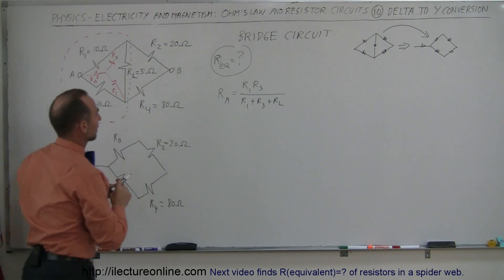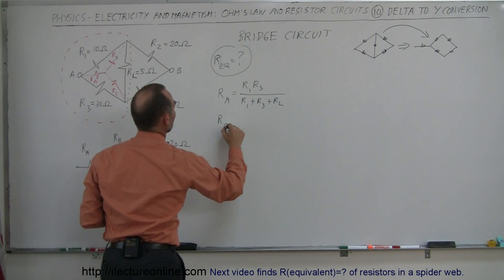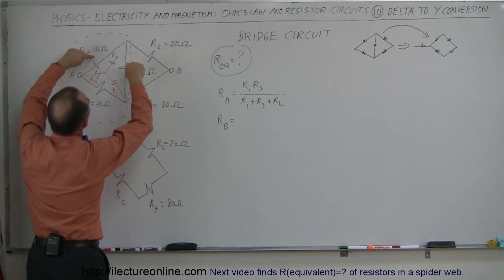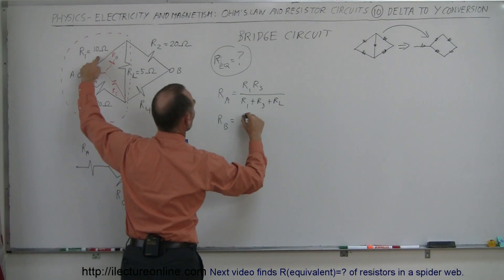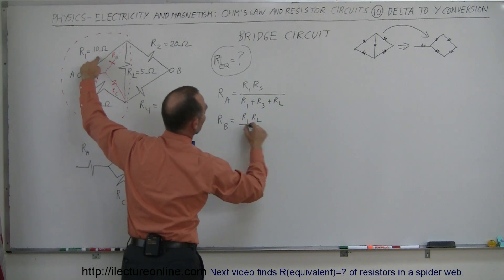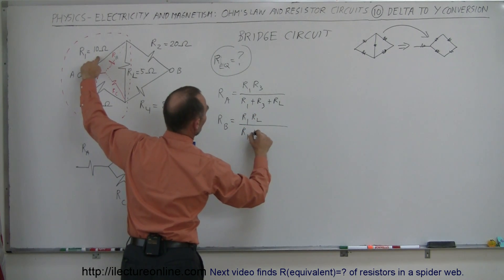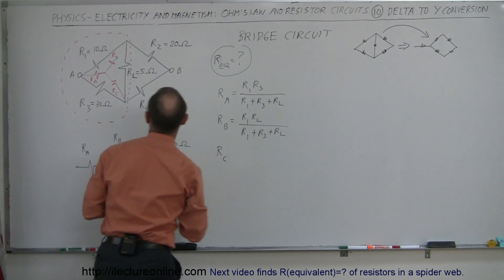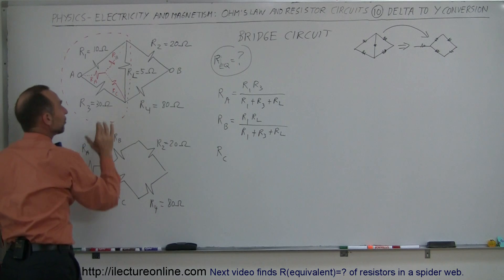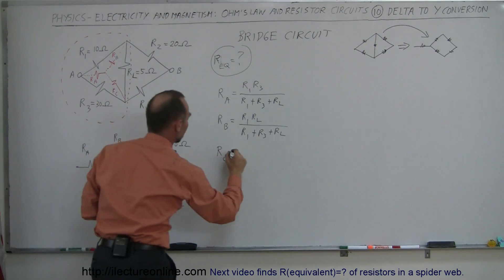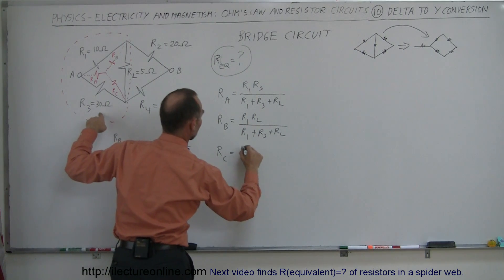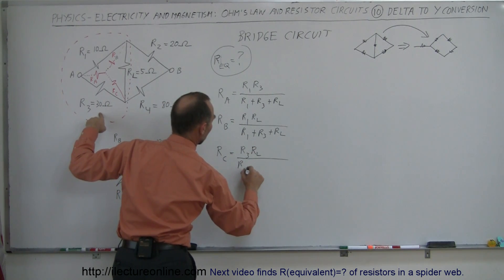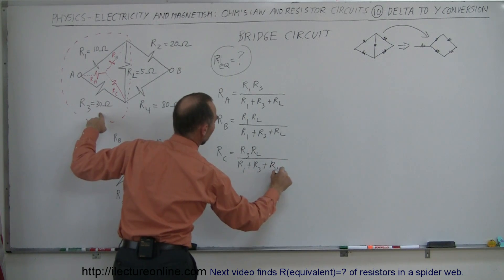Now take resistor B. Since resistor B is between nodes 1 and RL, it's going to be equal to the product of those two resistors — R1 times RL — divided by the sum of the three resistors, R1 plus R3 plus RL. And finally, resistor C, since that is between nodes 3 and RL, it'll be equal to R3 times RL, divided by R1 plus R3 plus RL.